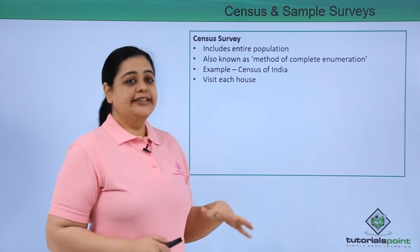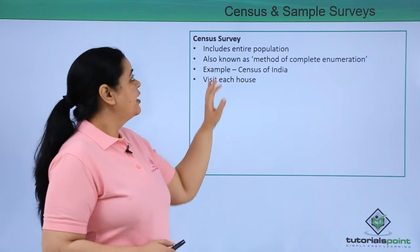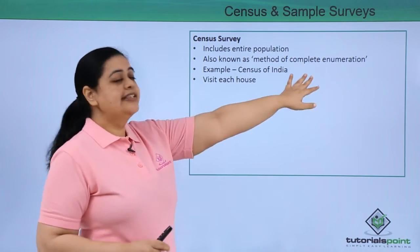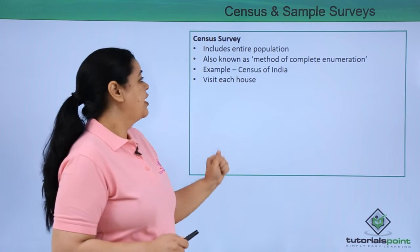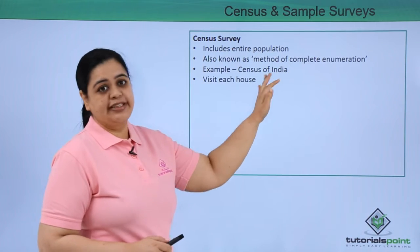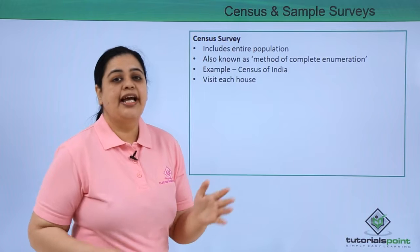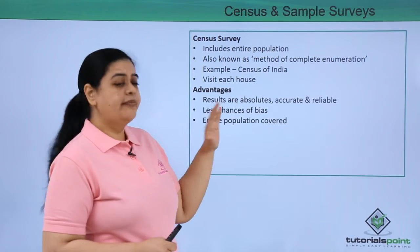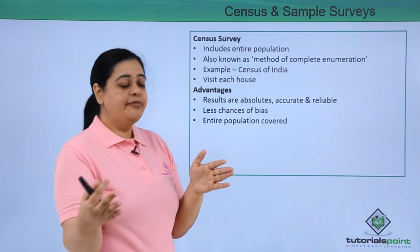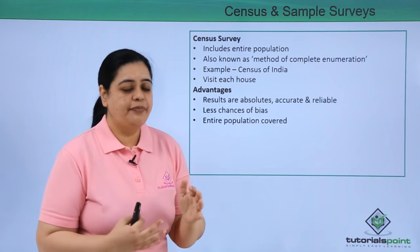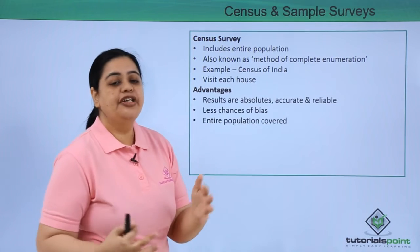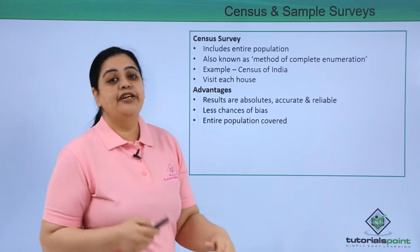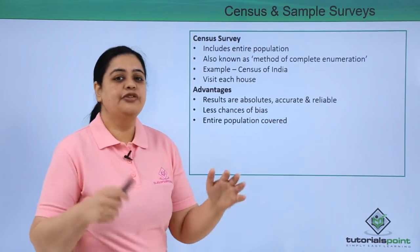Now let us understand more about the census survey and sample survey. In a census survey, the entire population gets surveyed, so it is also known as the method of complete enumeration. The Census of India is the best example, where we visit each house and collect data on a first-hand basis. The advantages are that it is accurate, reliable, and absolute — results obtained are accurate and reliable, with less chances of bias since the entire population is covered.